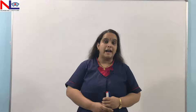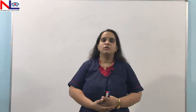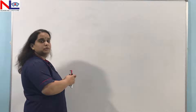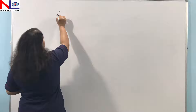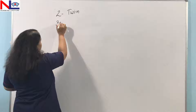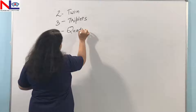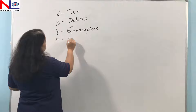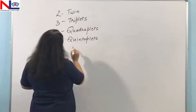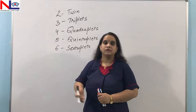There are a number of varieties in multiple pregnancy depending on how many fetuses are developing inside the womb. Depending on the number, we use specific terms: when two fetuses are developing, we call them twins; when there are three, triplets; four is quadruplets; five is quintuplets; and six is sextuplets. Out of these, the most common is twin pregnancy.